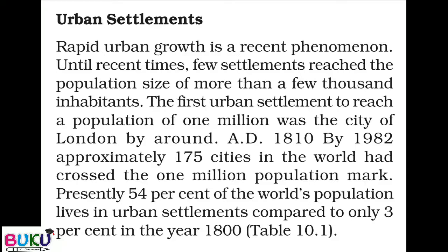Urban settlement के point of view से London first city था जिसने 1810 में 1 million population cross की थी, और 1982 तक 175 cities हो गई थीं जिन्होंने 1 million population mark को touch किया था। Presently 48% of the world's population lives in urban settlements — approximately 48% population urban area में रहती है। जबकि 1800 में सिर्फ 3% population थी जो urban area में रहती थी।